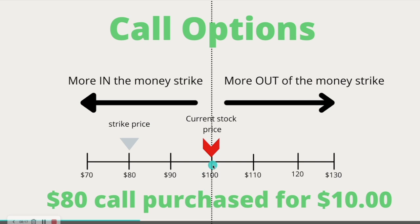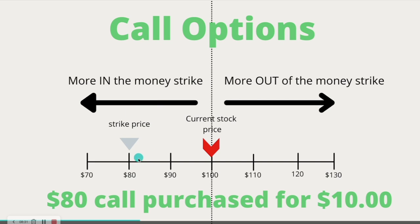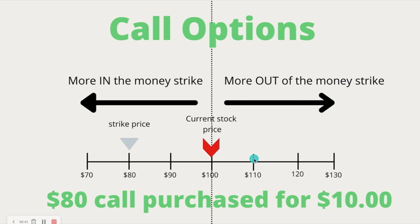So let's say instead you bought the $110 call and the current stock price is at $100. If you were to exercise the option, it would be worthless — because no one wants to own $110 shares of stock when the stock is currently trading at $100. Instead of buying and exercising that, you can just go and buy a hundred shares, and it's going to be cheaper than buying a hundred shares for $110.